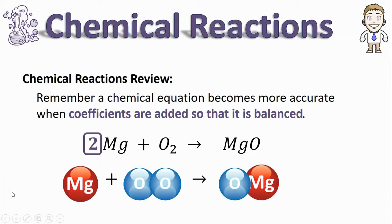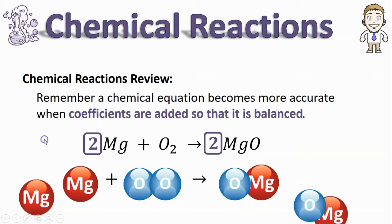Like here, if I had a coefficient of 2 in front of Mg, meaning there are two magnesium atoms, then I would also need a coefficient of 2 in front of the MgO to have those same two magnesium atoms on the other side.